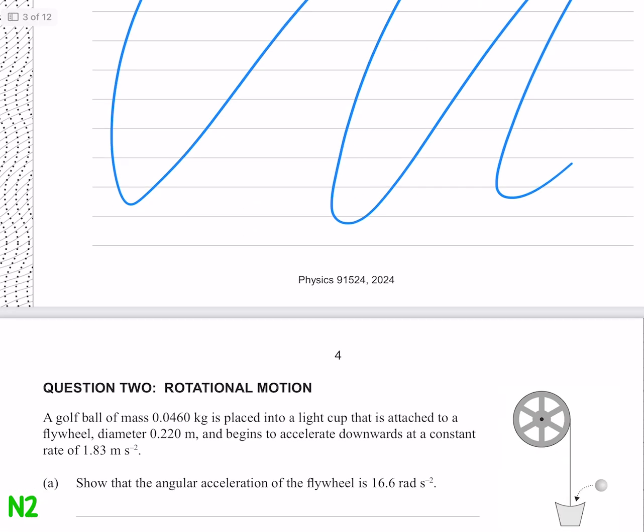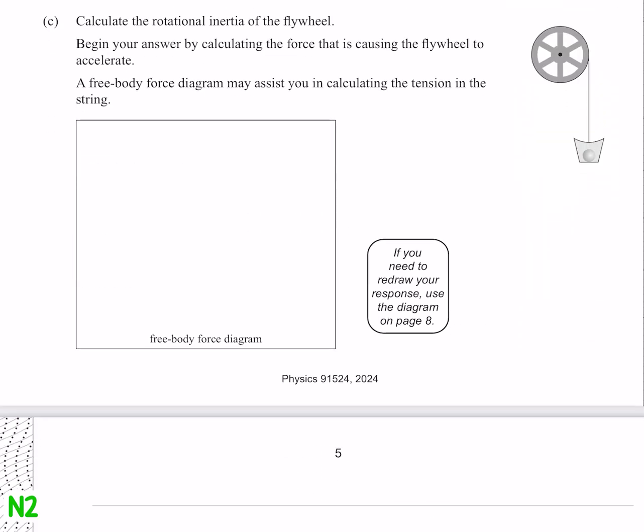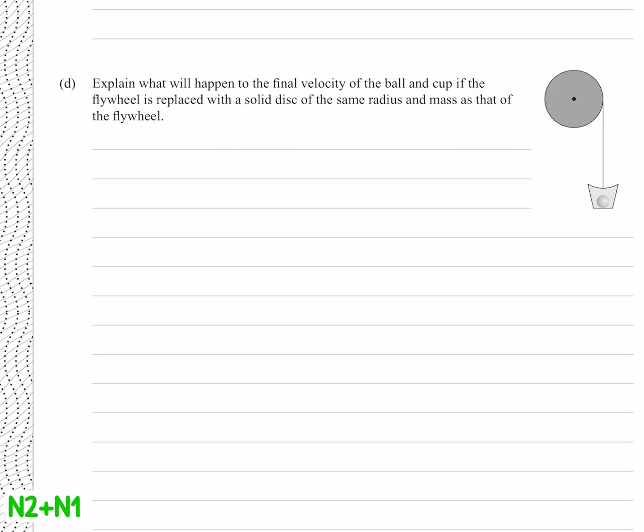Moving on to question 2. A golf ball of mass 0.460, and at the mention of golf I'm already starting to fall asleep, so we'll just skip ahead. Calculate the rotational inertia of the flywheel, not really in the mood for doing that, but we could say that the tension force in our string here is going to be the gravitational force from our cup and ball, minus the net force that is causing our wheel to spin. Explain what will happen to the final velocity of the ball and cup if the flywheel is replaced with a solid disc. Well if it's a solid disc with the same radius and mass, because the mass is no longer all on the outside, our I is going to be smaller, and if our inertia goes down, then our velocity is going to go up.